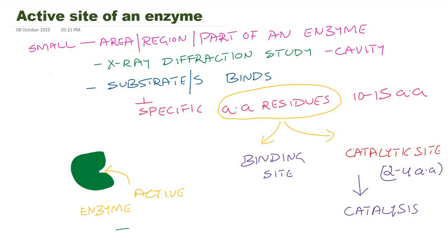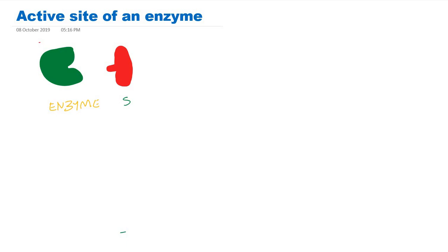The active site is a region where the reaction occurs. When the substrate binds to the binding site of the active site of an enzyme, it makes a chemical environment for catalysis. The catalytic site or catalytic residues of the active site actually speed up the reaction by decreasing activation energy. The binding of substrate to the enzyme induces the transition state of the substrate.